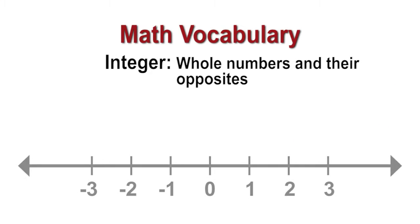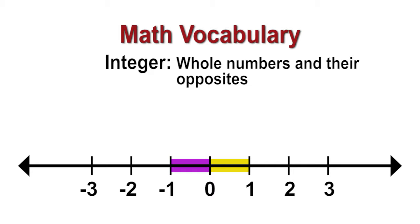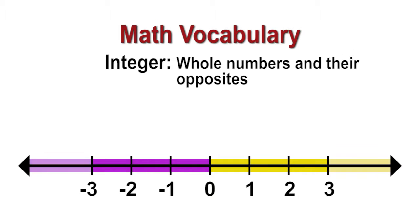Integers are whole numbers and their opposites. Look at the zero — one to the right of zero is positive one and one to the left of zero is negative one, so one and negative one are called opposites. Two and negative two are opposites, and three and negative three are opposites. This goes on forever. Notice that integers do not include fractions.